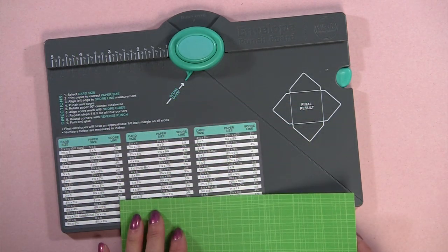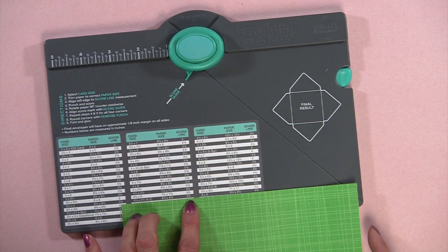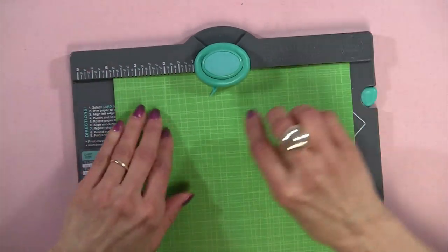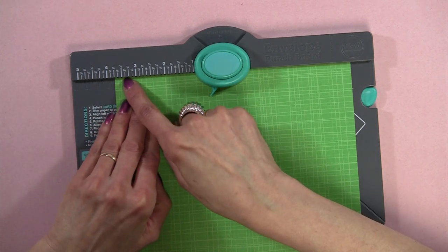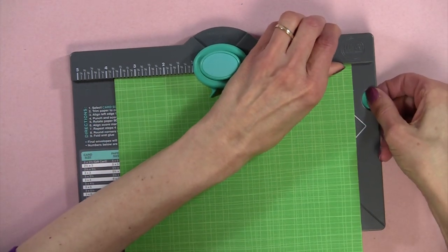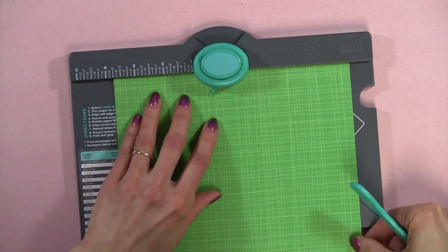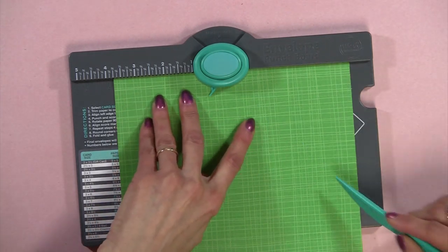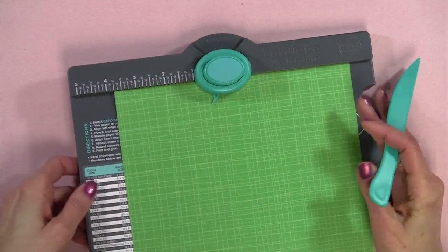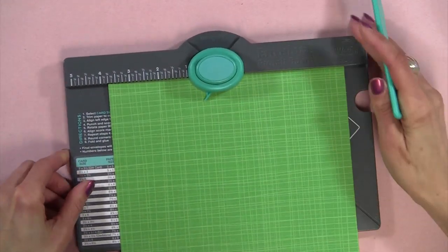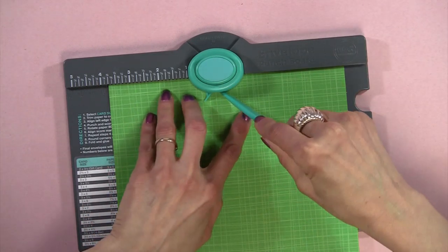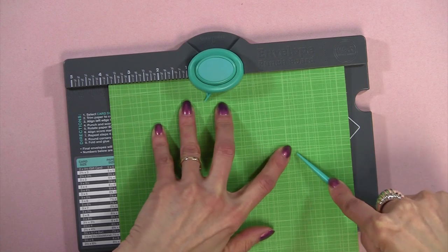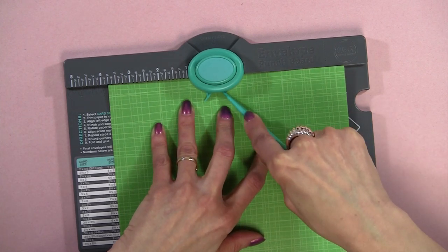And then if you look here again for the A2, it says to score on the three and three quarters inch line. And right here it says three and three quarters. And I'm going to pull out my bone folder. And this is where you have to be very careful as well. There's a score line here. And if you line up your bone folder just right in here, you can kind of feel the line.